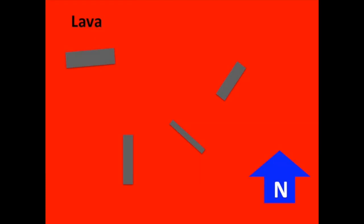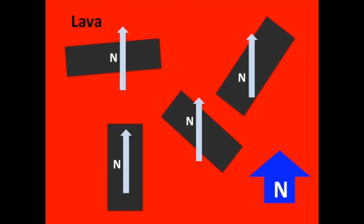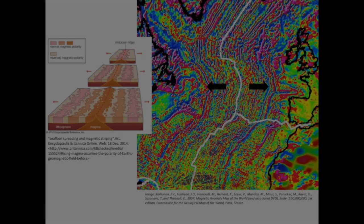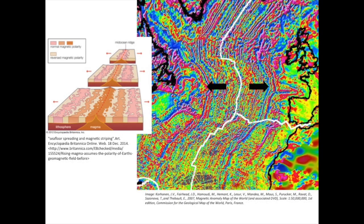As the lava cools, it forms tiny magnetic mineral grains. As these minerals cool, they turn into tiny magnets aligned with the Earth's magnetic field. This magnetic fingerprint is locked into the crust when it solidifies and can stay there for a very long time.